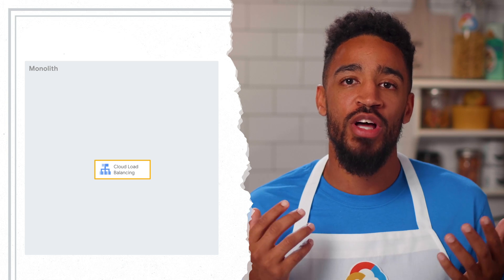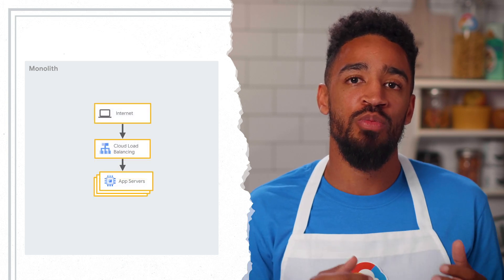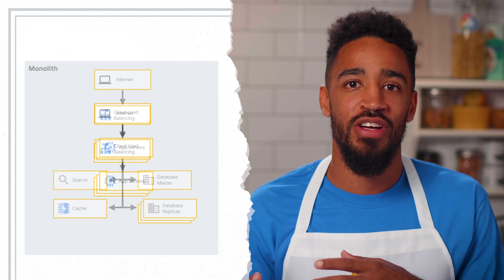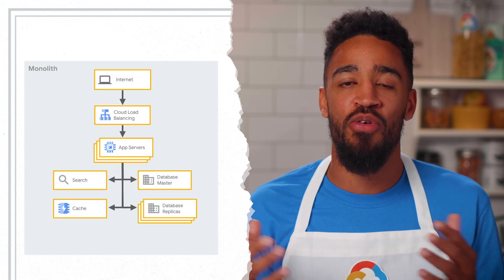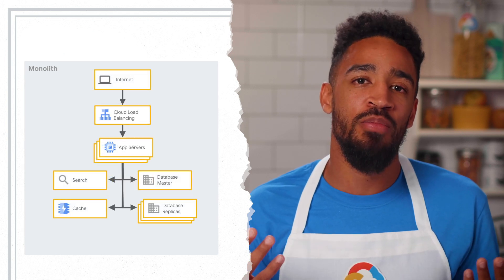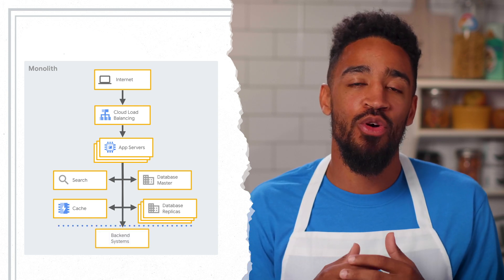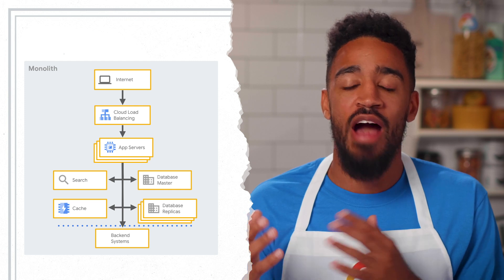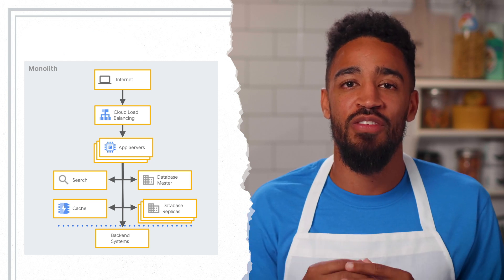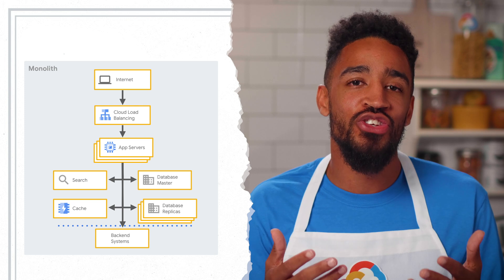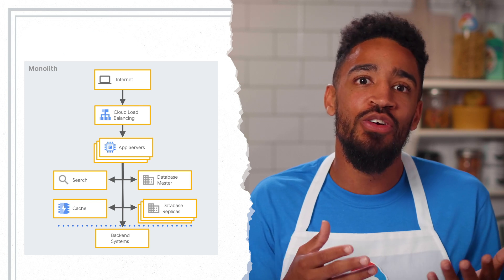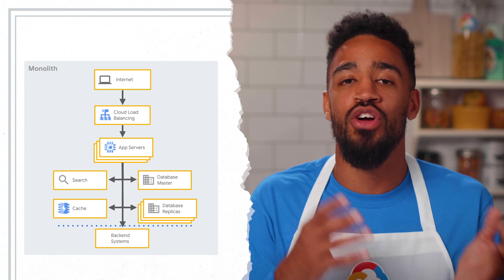For most e-commerce platforms, the starting point is a monolithic application on-premises. Your platform will probably have load balancers to handle incoming requests from the web. These requests will be routed to your application servers, which are responsible for processing the requests by utilizing components like cache, database, search, et cetera. Additionally, your app servers may send requests to other back-end systems. This should serve as an example that's similar in theory to yours, so you can migrate it towards our target architecture.